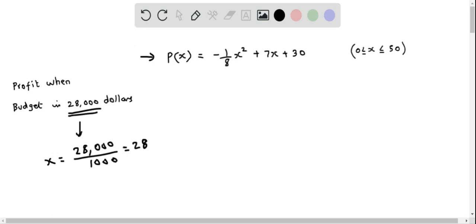We need to find the profit function evaluated at x = 28. Replacing x with 28 in the equation, we get P(28) = -1/8 (28)² + 7(28) + 30.